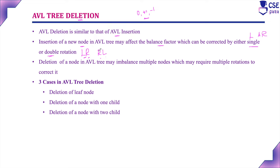Insertion of a new node into an AVL tree can be corrected by either a single or double rotation, but compared to insertion, deletion of a node in an AVL tree may imbalance multiple nodes. To correct the balance factor we may need to implement multiple rotations — a single or double rotation is not enough. So compared to AVL tree insertion, AVL tree deletion is more complicated.